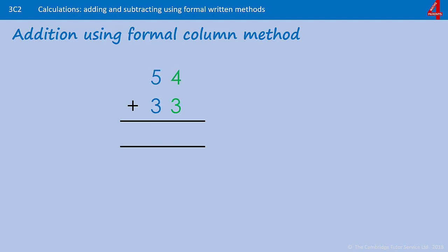Here is one for you to try before we move to some more challenging ones: 54 add 33. Pause the video and have a go. Starting with the ones column: 4 add 3 is 7. And the tens column: 5 add 3 is 8. The answer is 87.